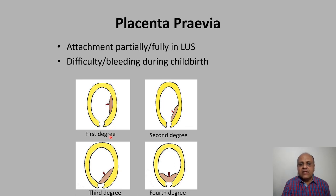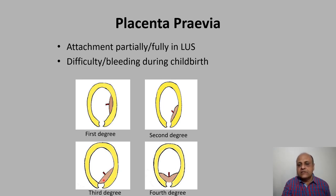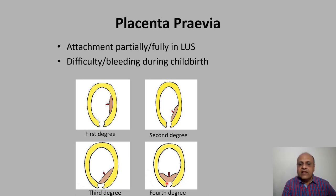This is first degree placenta previa. In second degree, the attachment extends up to the internal os but does not cover it. In third degree, the placenta covers the cervix, but when the internal os dilates during delivery, normal delivery is still possible. In first, second, and third degree placenta previa, normal delivery is possible. In fourth degree, the placenta covers the cervix such that even when the internal os dilates, normal delivery is not possible — so a cesarean section has to be done.